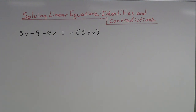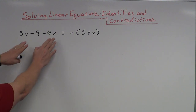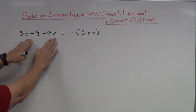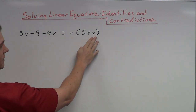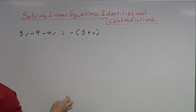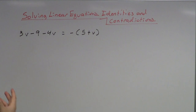Alright, so here we go. I have an example of solving an equation. I'm going to solve it like you normally would. This looks like a problem where I have variables on both sides — I've got v's on the left and a v on the right. So I want to get all the v's to one side.